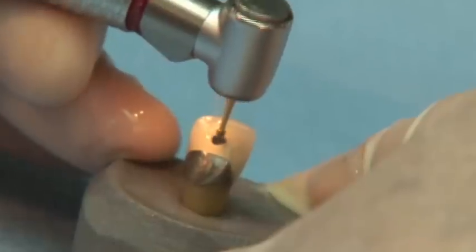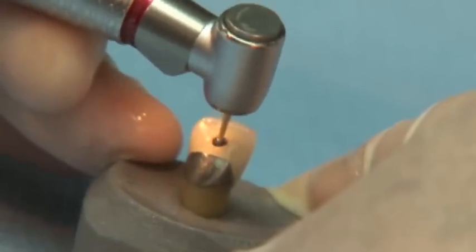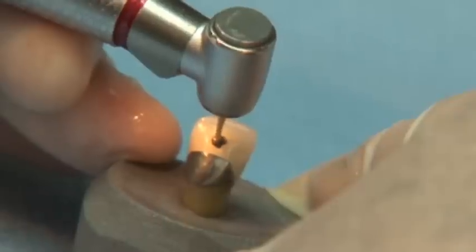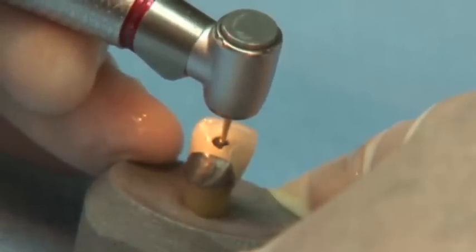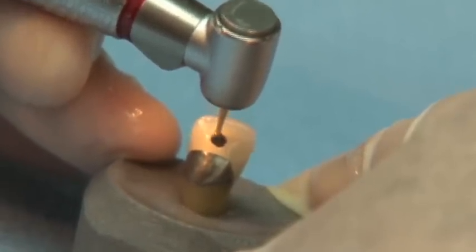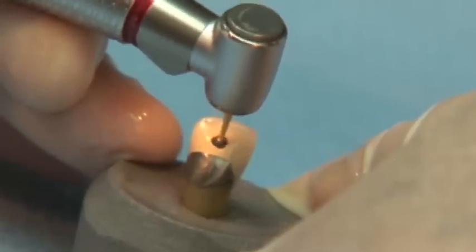Clinicians no longer have to worry about how thick the metal coping is, because the Great Whites will cut through any metal at any thickness. After the initial access through the restoration or tooth is created,